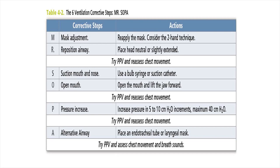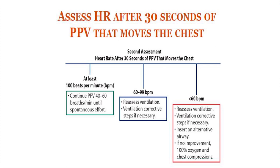MR SOPA stands for: Mask adjustment, Reposition of airway, Suction mouth and nose, Open mouth, increase Pressure, and Alternate airway. Perform at least two steps, then reassess chest movement to determine if PPV is adequate. After giving adequate positive pressure ventilation with adequate chest rise, give PPV for 30 seconds, then reassess heart rate.